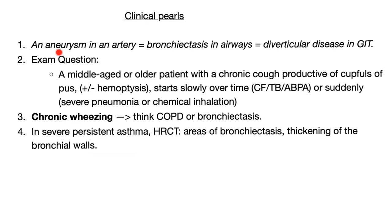Clinical pearls: an aneurysm in an artery is equivalent to bronchiectasis in an airway — it's dilatation in the wall. And it's equivalent to diverticular disease in the GI tract — same concept. Medicine makes so much sense when explained properly.